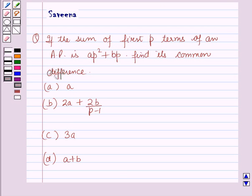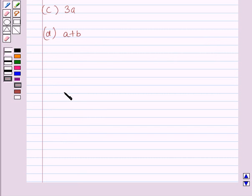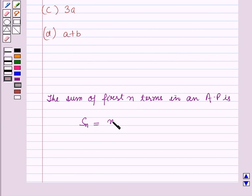Now before starting the solution of this question, we should know a result. The sum of first n terms in an AP is given by Sn equals n by 2 into 2a plus n minus 1 the whole into d.